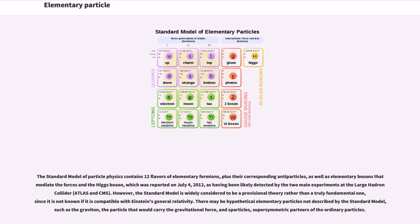The standard model of particle physics contains 12 flavors of elementary fermions, plus their corresponding antiparticles, as well as elementary bosons that mediate the forces and the Higgs boson, which was reported on July 4, 2012, as having been likely detected by the two main experiments at the Large Hadron Collider, ATLAS and CMS. However, the standard model is widely considered to be a provisional theory rather than a truly fundamental one, since it is not known if it is compatible with Einstein's general relativity.